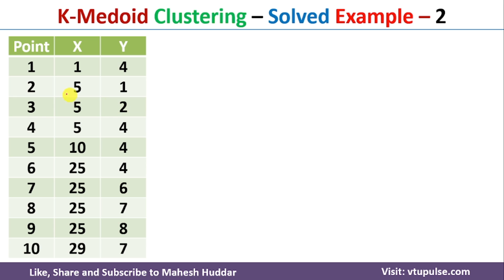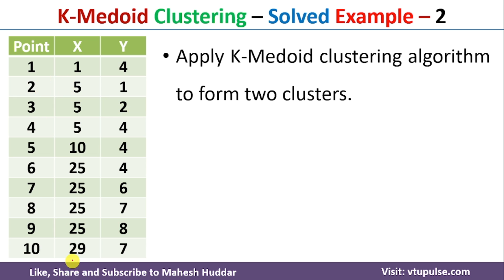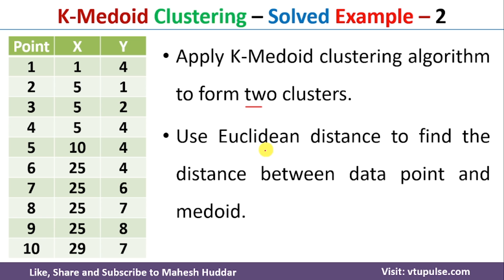In this case, we have been given a dataset with 10 data points. Given this particular dataset, we need to apply the K-medoid clustering algorithm to form two clusters. We need to use the Euclidean distance formula to find the distance between a data point and the medoid.